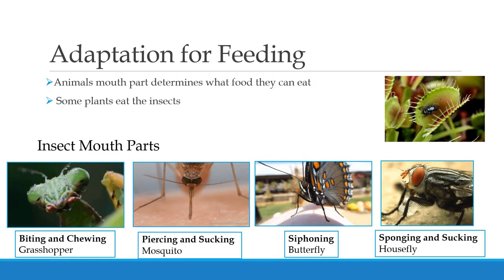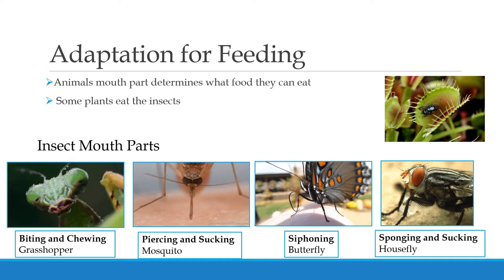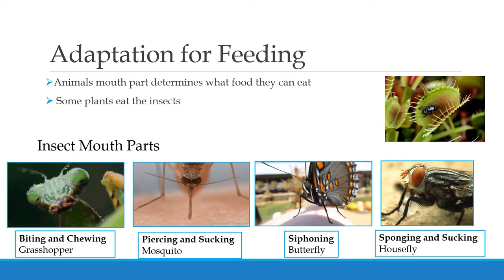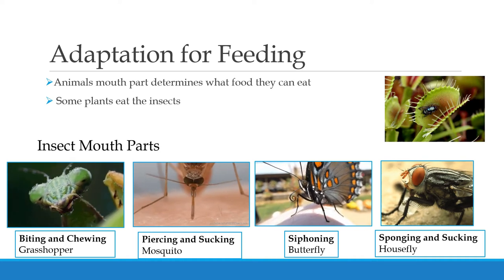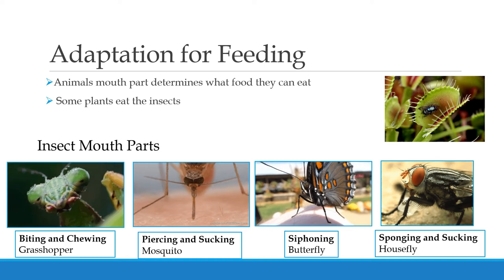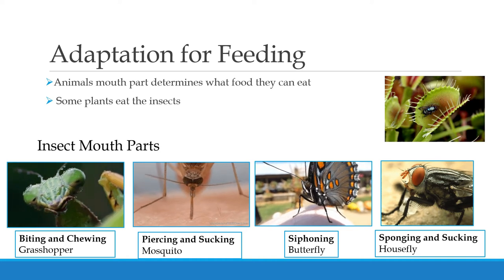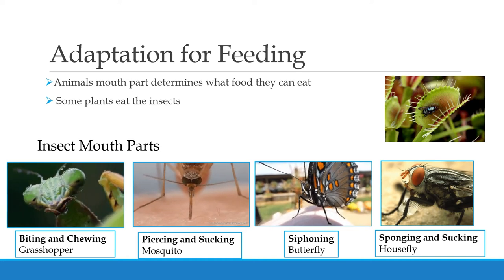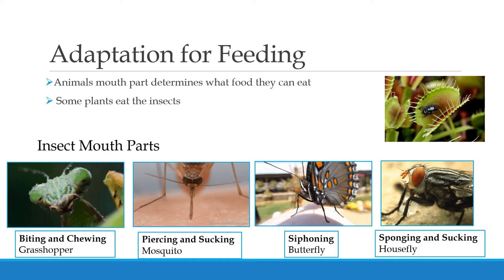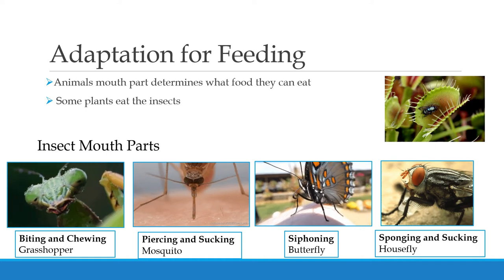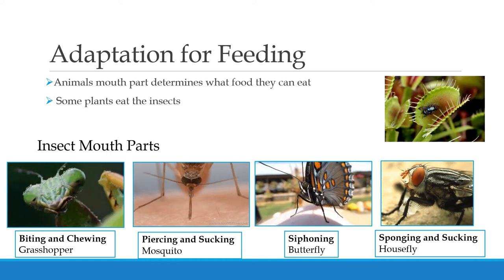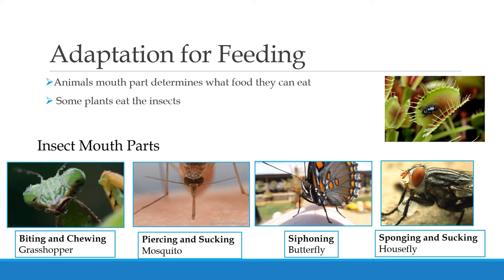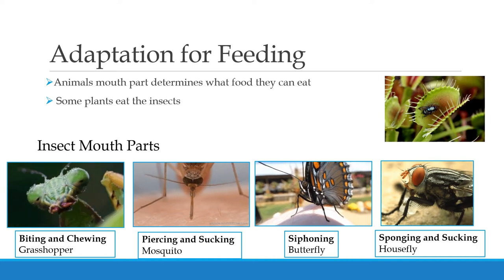Adaptation for feeding: an animal's mouth parts determine what food it can eat. Some plants also eat insects — you can see the picture where the plant eats an insect. The name of this plant is the Venus flytrap; it is an insect-eating plant.